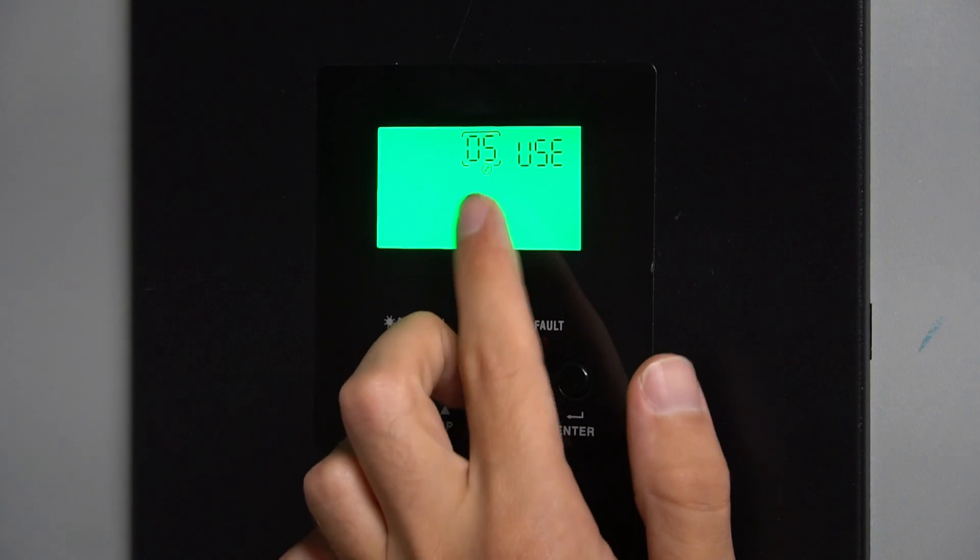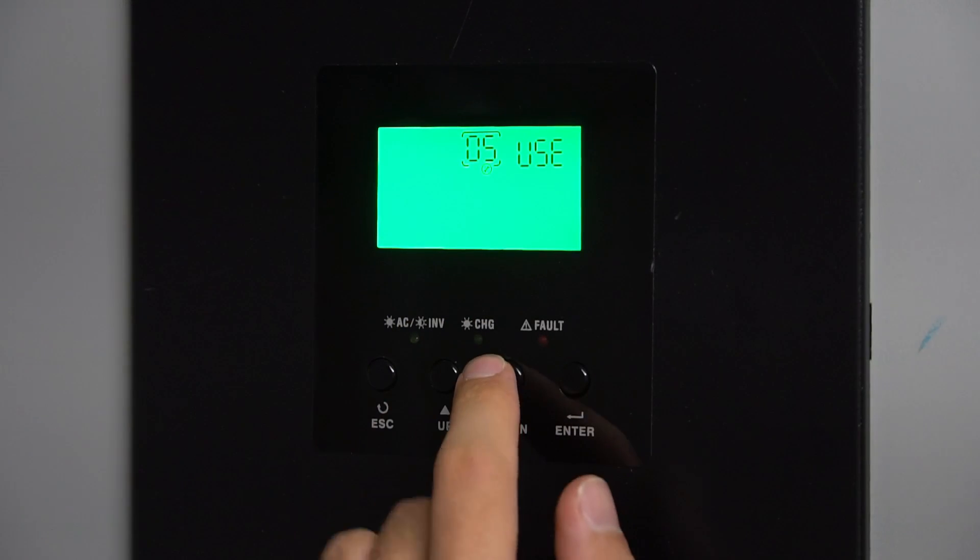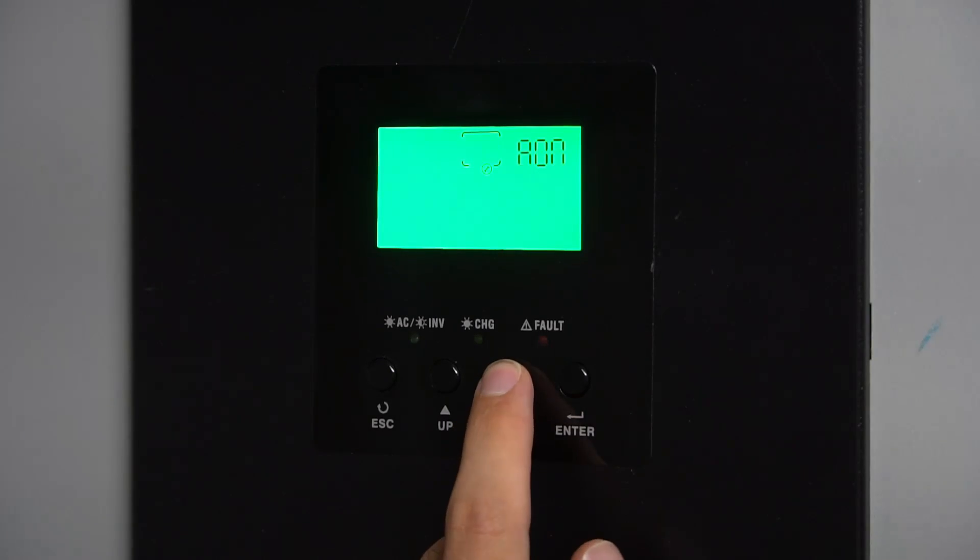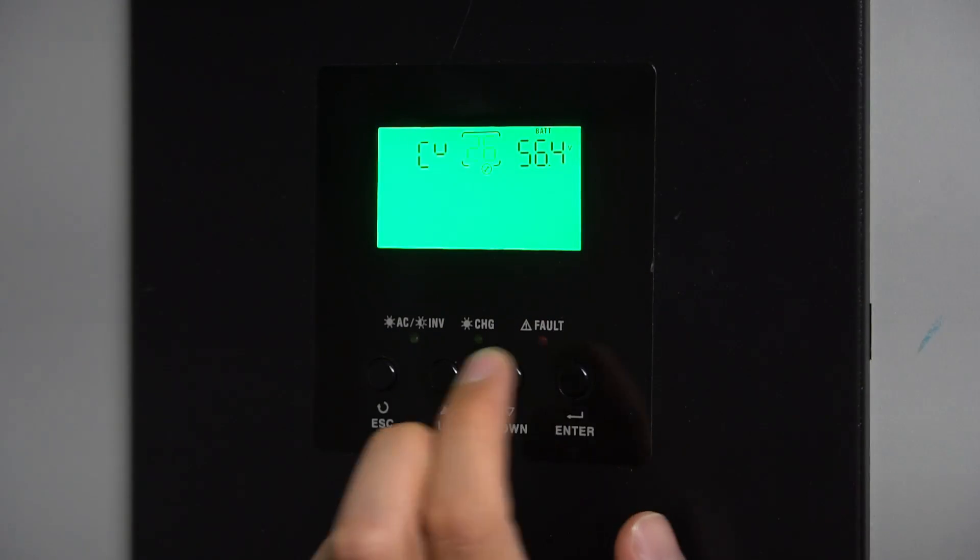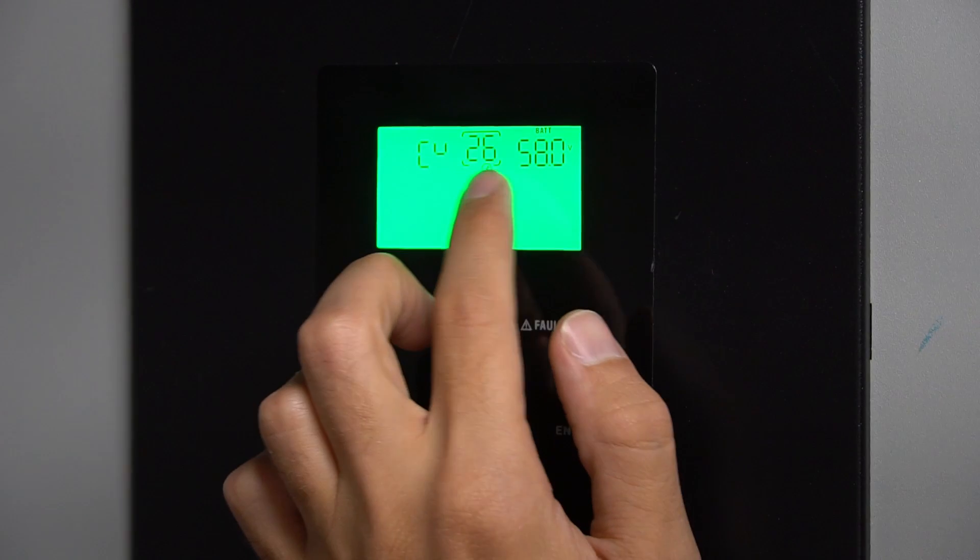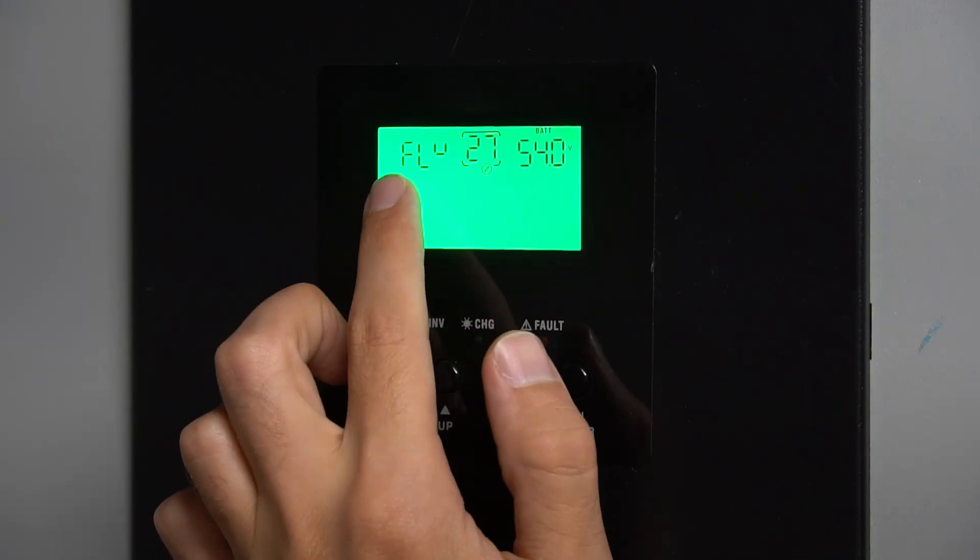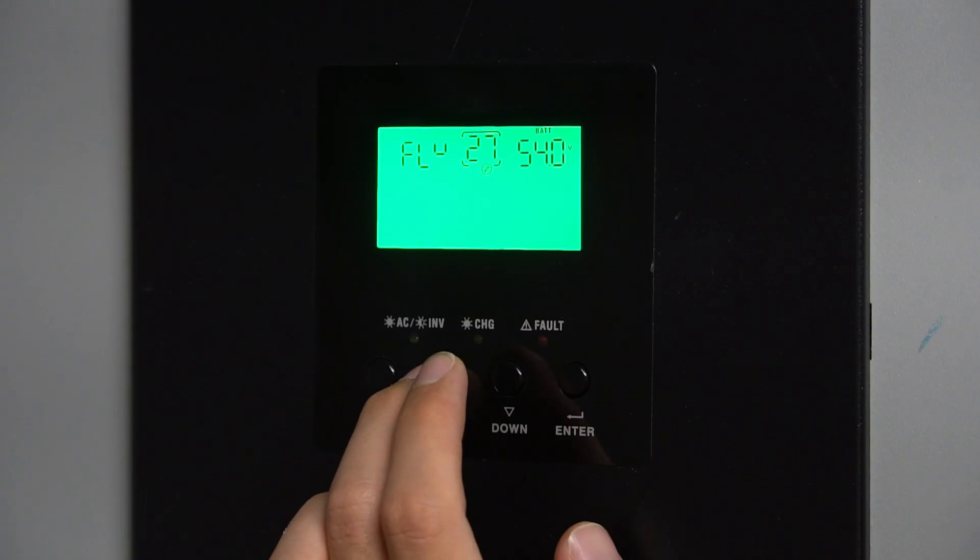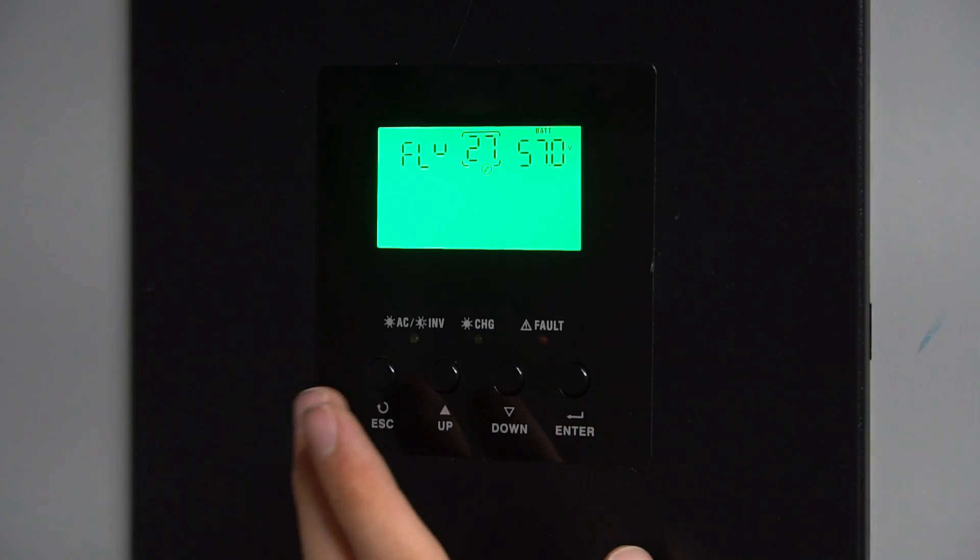To set the absorption, make sure setting number five is on user and then press enter and then go down to setting 26. Number 26 is the charge voltage or the absorption. We want to set this to 58. Now that the charging voltage is set to 58 volts, we can press the down button and go to float. Let's press enter and go up to 57 volts. And then press enter and you are good to go.